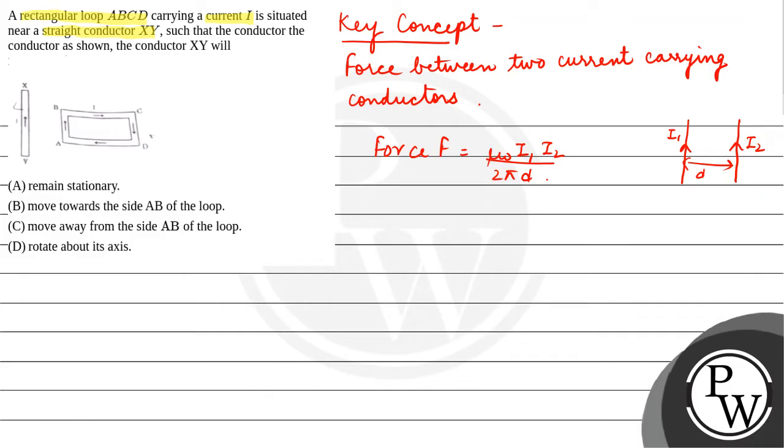Now you have the question. The conductor given is XY and the loop given is A, B, C, D. Current passes through the loop clockwise, and the current is given as I. The conductor XY has current in the upward direction. Let's say the current is I dash. Now you have a distance, let's say X, and this distance, let's say Y.